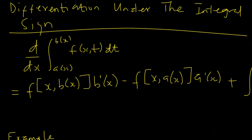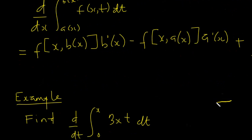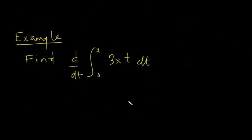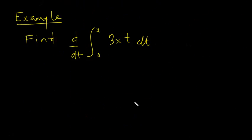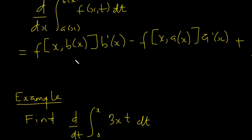That's how we differentiate under the integral sign. Here's a quick example. The solution will be straightforward. We have f(X, T) = 3XT.